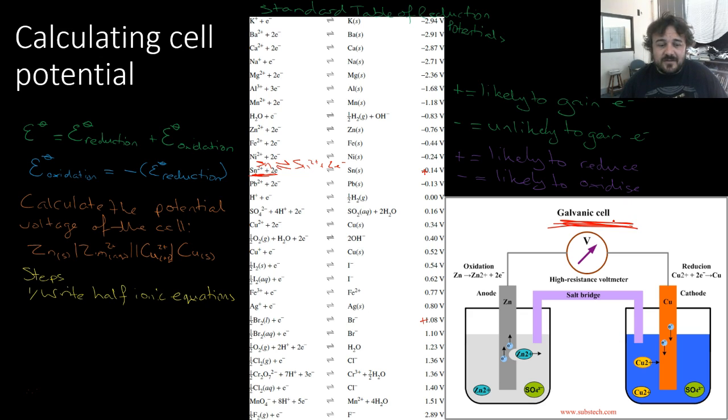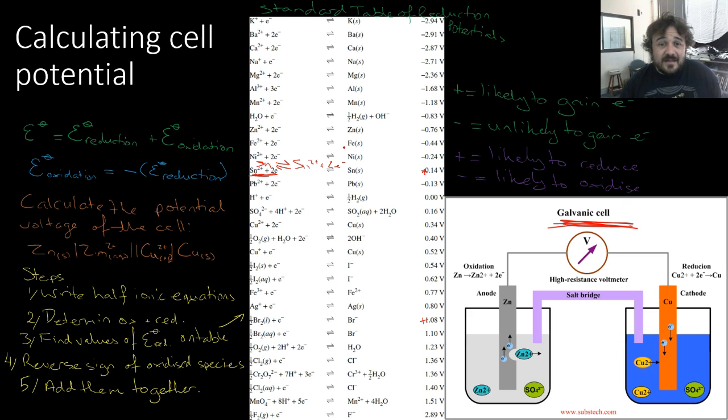The first, you write the half ionic equation. We're going to do this in a second. Then, you determine which ones are oxidized and which ones are reduced. You find the values on the E-nought reduction table. Okay, so they're just on the table here. Reverse the sign of the oxidized species, and finally, add them together. That's it. This is a calculation that comes up time and time again, and it's that simple. It is a process. Know how to do it, step by step by step.